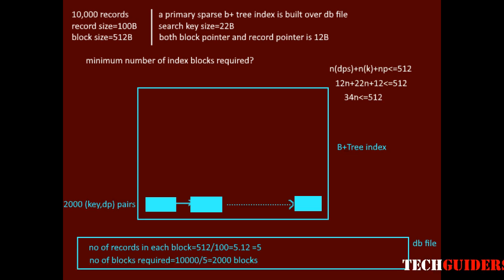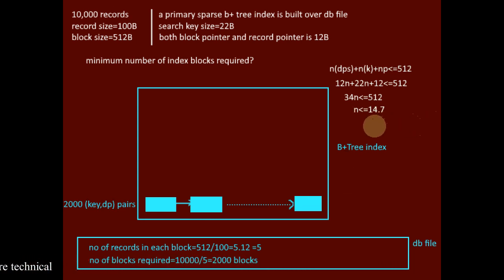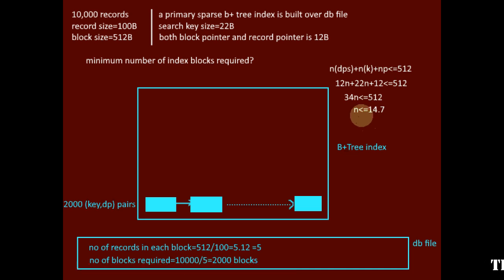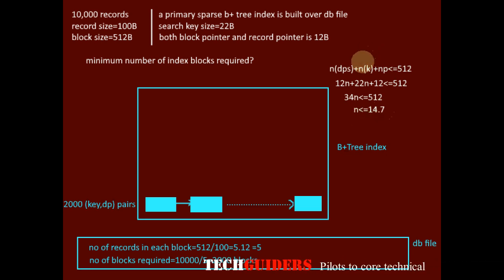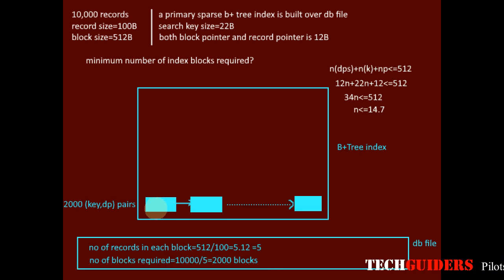This implies 34n + 12 ≤ 512, so 34n ≤ 500, hence n ≤ 14.7. Thus the maximum possible value for n is 14. If n were 15, the 512 bytes would not be enough. Hence the maximum number of key-data pointer pairs that can be kept in each leaf node is 14.